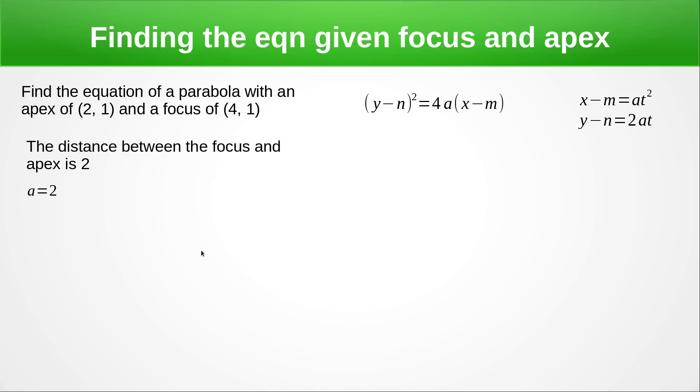We've got the coordinates of the apex, so that's going to give us our m and n values straight away. So we're now going to substitute a equals 2, m equals 2, and n equals 1 into this equation to give us our Cartesian form and into this pair of equations to give us our parametric form.